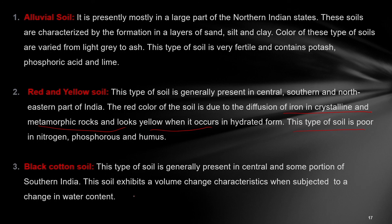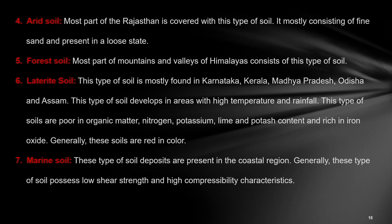The montmorillonite mineral is responsible for the behavior of black cotton soil, which is generally present in central and some portions of south India. Arid soil is generally present in most parts of Rajasthan and mostly consists of very fine sand in a loose state. Forest soil is present in the mountains and valleys of the Himalayas. Laterite soil is mostly found in Karnataka, Kerala, Madhya Pradesh, Odisha, and Assam. It develops in areas with high temperature and rainfall and is poor in organic matter, nitrogen, potassium, lime, and potash, but very rich in iron oxide. Due to the presence of iron oxide, this soil is red in color and generally does not pose any problem to foundations — therefore this soil is very stable.